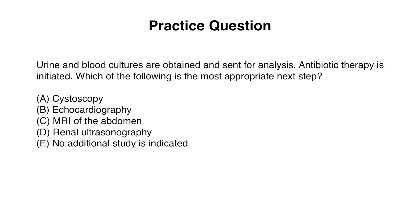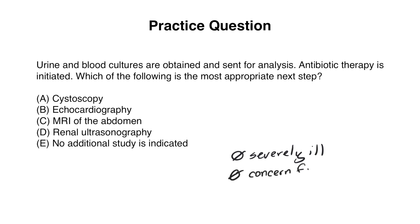This patient is presenting with all findings consistent with pyelonephritis and is being treated for it. Does anything else need to be done? We discussed imaging and its indications — but does this patient meet the criteria? She was just started on medication, so we can observe her response over time. She isn't severely ill; fever and elevated white count are expected with pyelonephritis. She has no hypotension or signs of septic shock, and no acute decline in renal function concerning for a stone. The correct answer here is E.